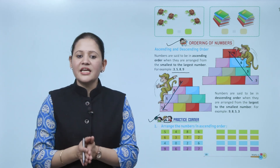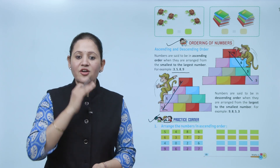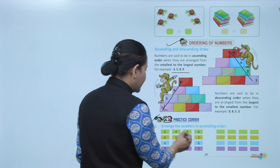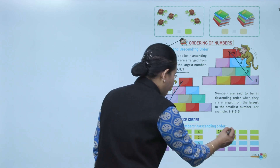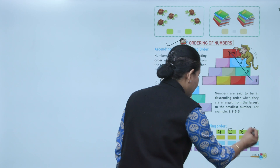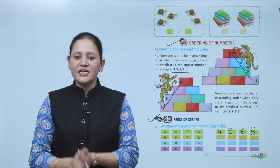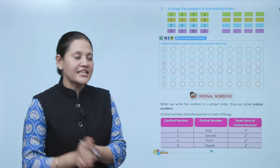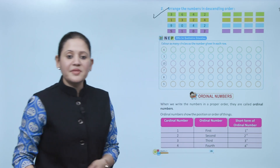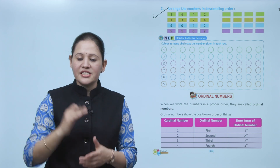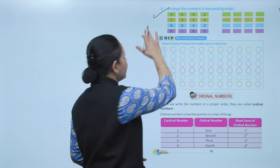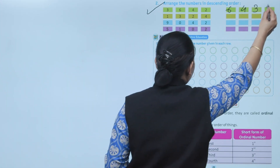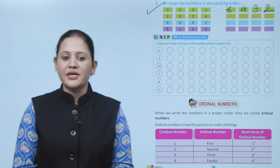Practice corner: the smallest number is 4, then 5, then 6, then 8 — so this is the ascending order. Next, arrange numbers in descending order — from greatest to smallest. Which is the greatest? 6, then 4, then 3, then 2 — this is the decreasing order of numbers.